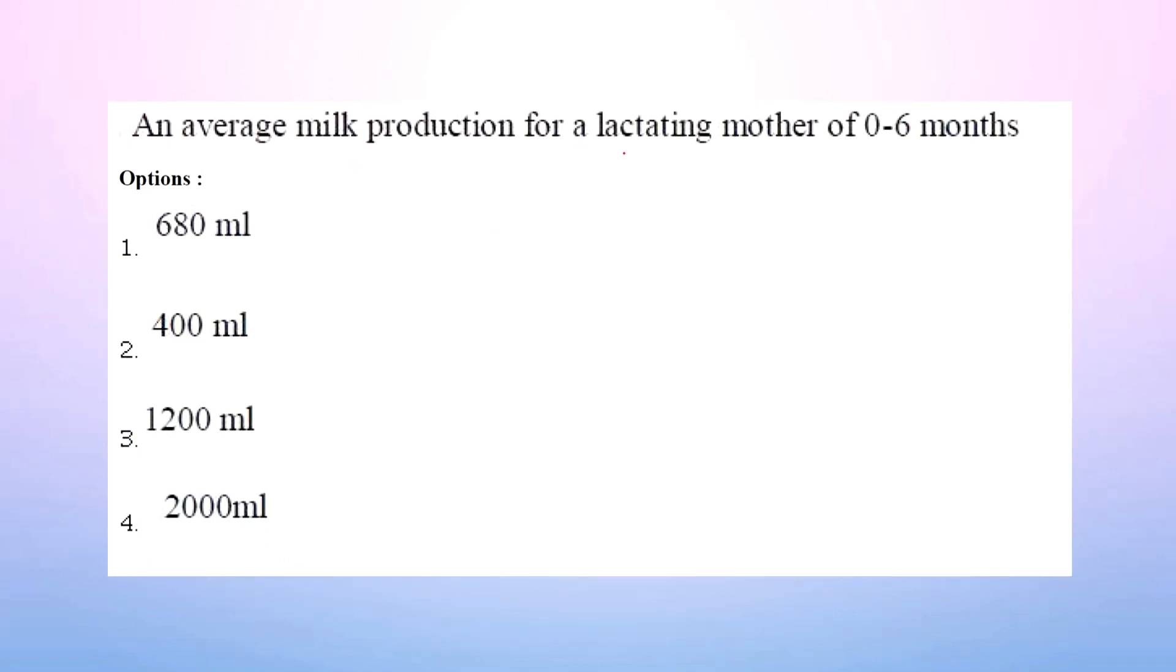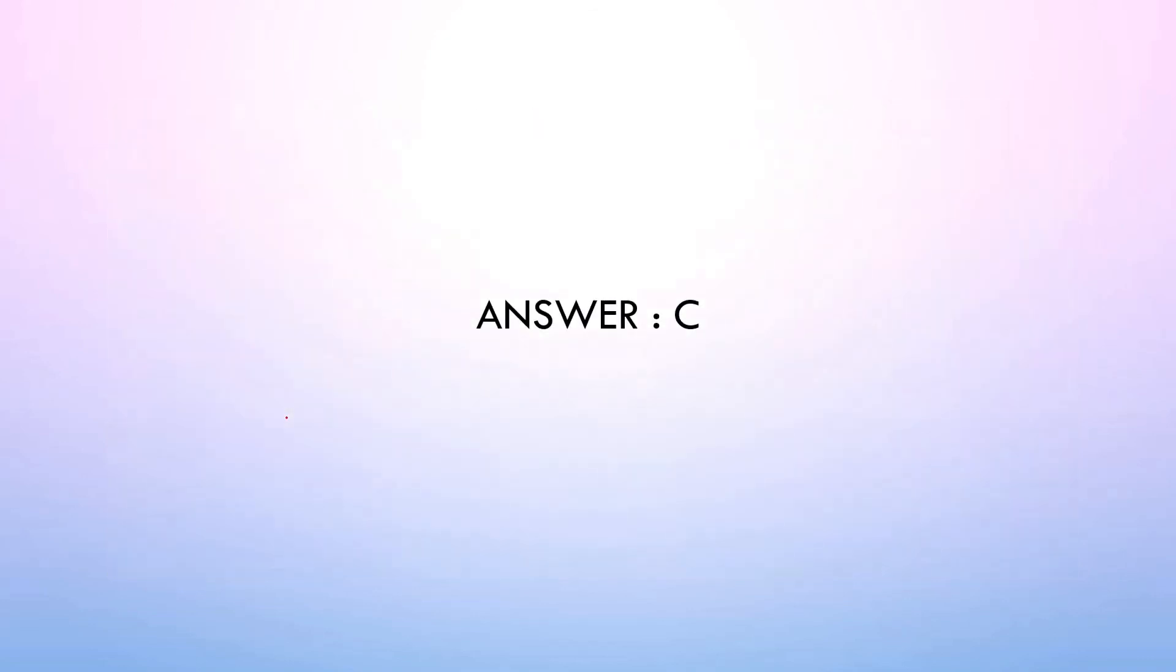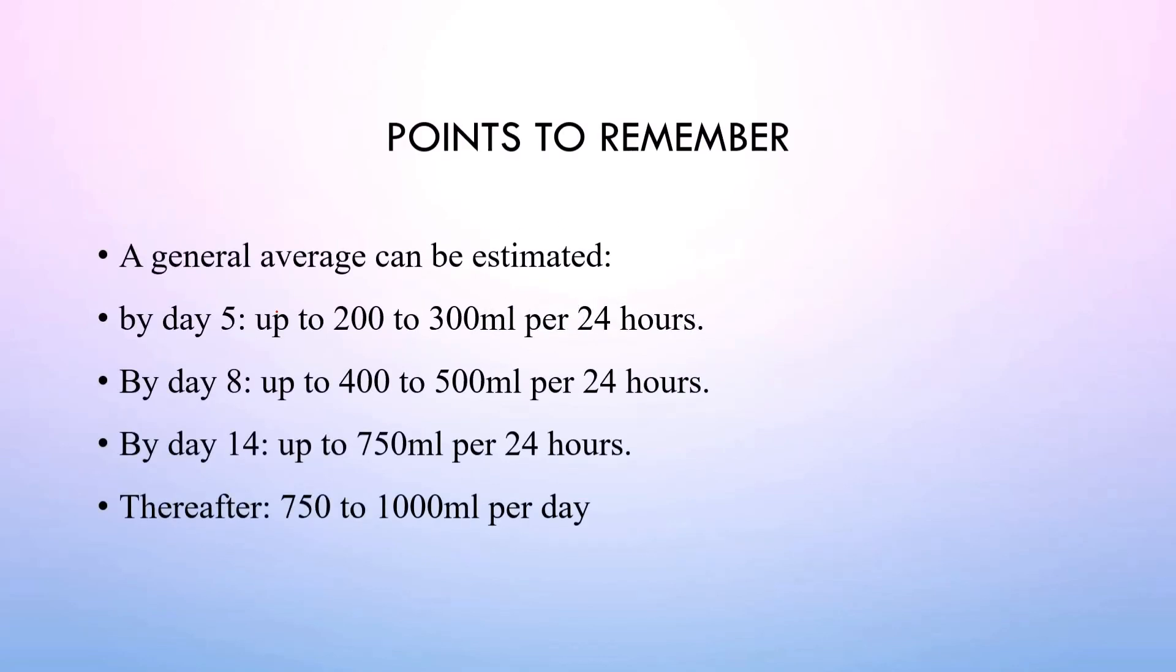Next question: average milk production for a lactating mother of 0 to 6 months. Options: 680 ml, 400 ml, 1200 ml, 2000 ml. The correct option is option C, 1200 ml. Here are some points: Average milk production for first 3 days is colostrum. After the 3rd day, actual milk is produced. On the 5th day, 200 to 300 ml. On the 8th day, 400 to 500 ml. On the 14th day, 750 ml per day. Gradually, milk production increases depending upon child requirement.